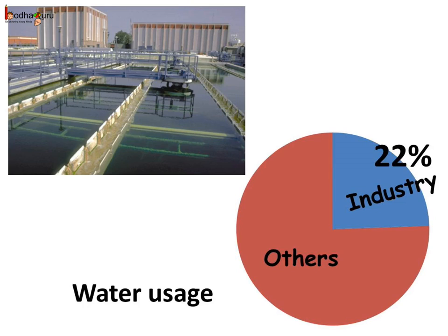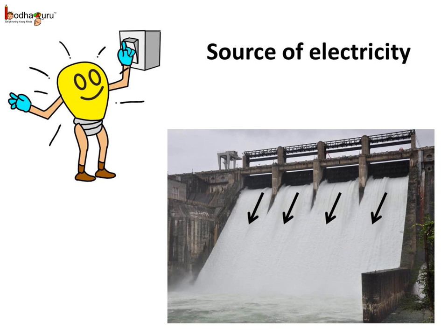All industries and factories use a huge amount of water as raw material. Water is used in factories for production, cleaning, making electricity, cooling, chemical reactions, and many other things. It is estimated that 22% of all used water is used in industry alone.